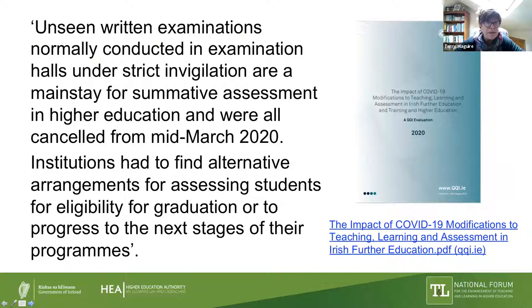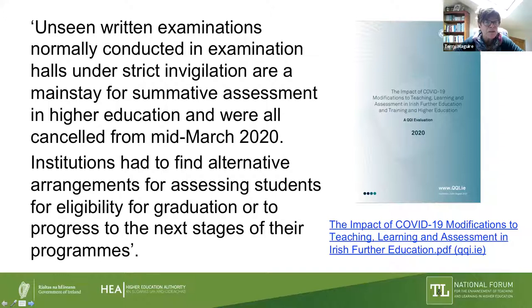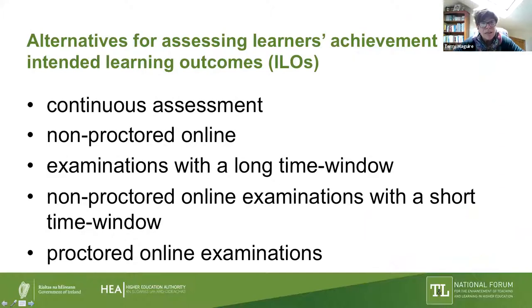Then COVID started and hit us all. I'm grateful to the QQI for their report. Unseen written examinations — normally conducted under strict invigilation — were the mainstay of summative assessment in higher education, and they were all cancelled in mid-March. Institutions had to find alternative arrangements for assessing students for eligibility for graduation or to progress to the next stages of their program. We looked at alternative assessments: continuous assessments, non-proctored online assessments with a long time window, non-proctored online examinations with a short time window, and proctored online examinations.